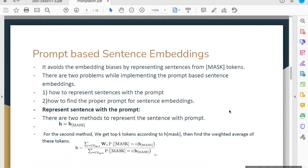There are two problems while implementing the prompt-based sentence embeddings. One, how to represent sentences with the prompt? And two, how to find a proper prompt for sentence embeddings? Let's see the first one. Here we are going to see two methods to represent a sentence with the prompt. For example, we have a template where X means mask, then we map X to X prompt with the template, then we feed X prompt to the pre-trained model to generate sentence embeddings.